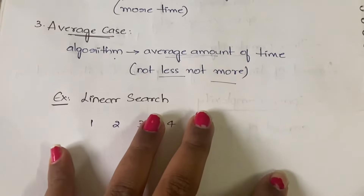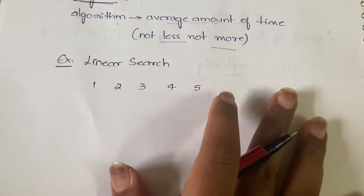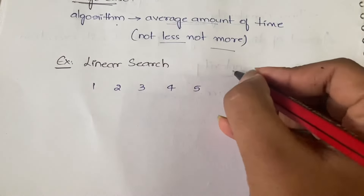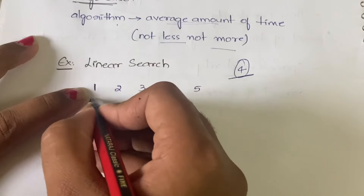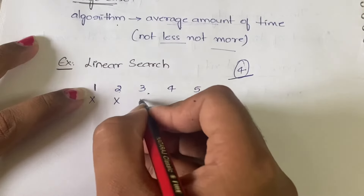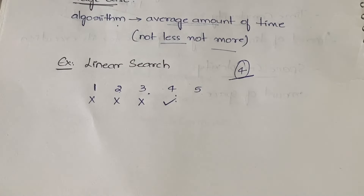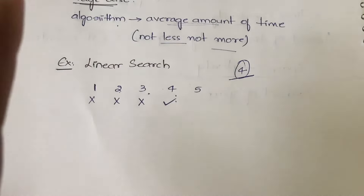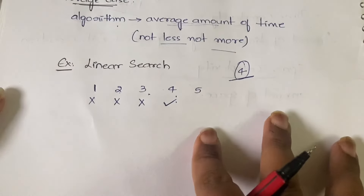Now let us take an example with linear search. Suppose you have elements 1, 2, 3, 4, 5. If you want to search for the number 4, in linear search you search one by one: first element — no match, second — no, third — no, fourth — yes, it matches. You search element by element. Unlike binary search, linear search goes one by one.